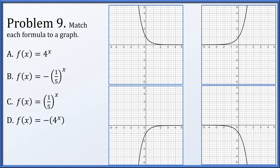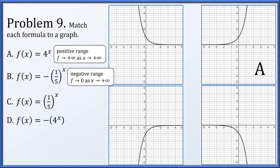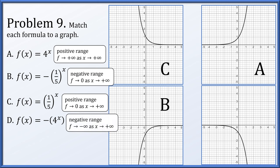For problem 9, match 4 to the x, negative 1/5 to the x, 1/5 to the x, and negative 4 to the x to four graphs. 4 to the x has a positive range and goes to infinity as x increases — that's the upper right graph. Negative 1/5 to the x has a negative range and goes to 0 as x gets large — that's the bottom left. 1/5 to the x has a positive range and goes to 0 — that's the upper left. Negative 4 to the x has a negative range and goes to minus infinity — that's the bottom right.